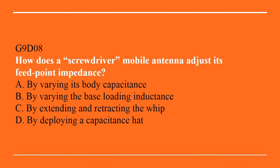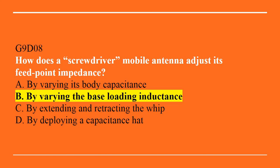G9D08: How does a screwdriver mobile antenna adjust its feed point impedance? A. By varying its body capacitance. B. By varying the base loading inductance. C. By extending and retracting the whip. Or D. By deploying a capacitance hat. The answer is B, by varying the base loading inductance.